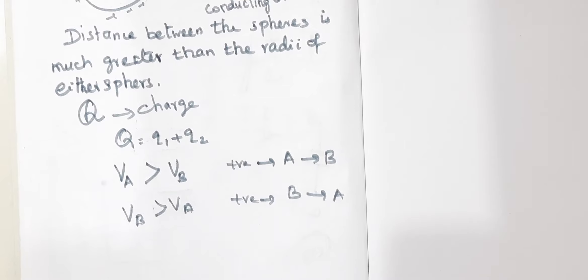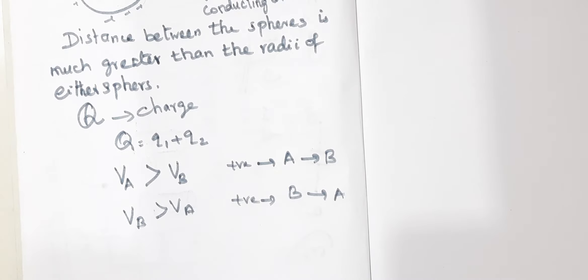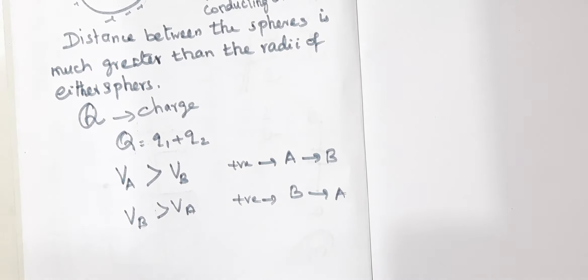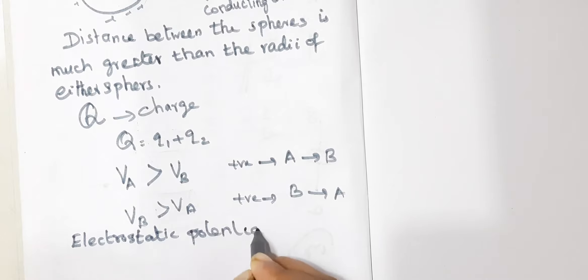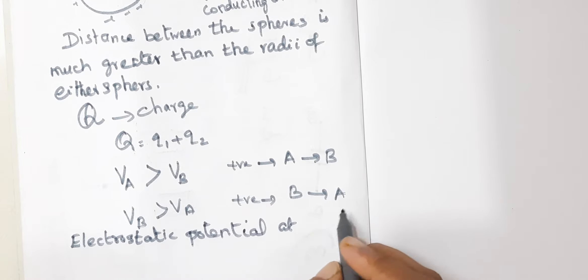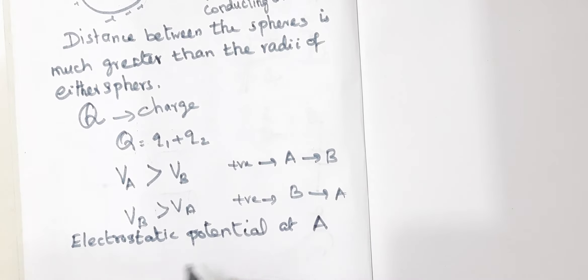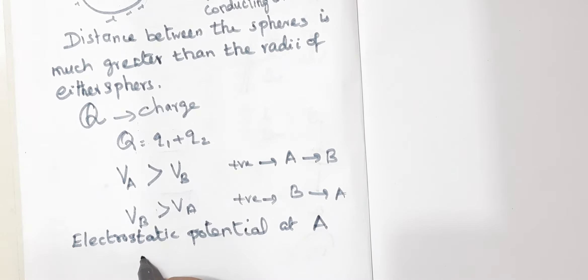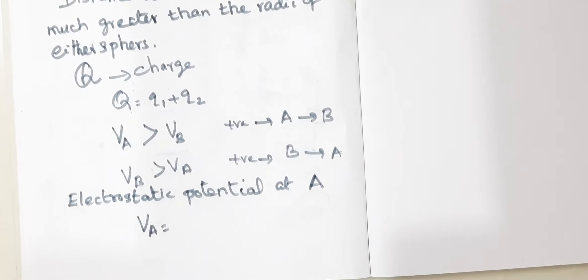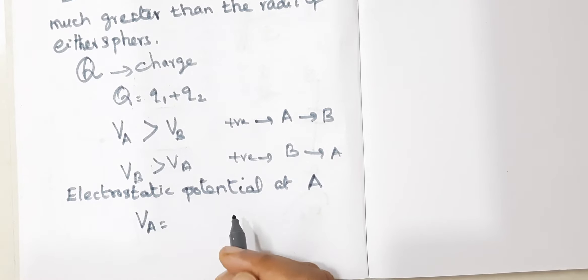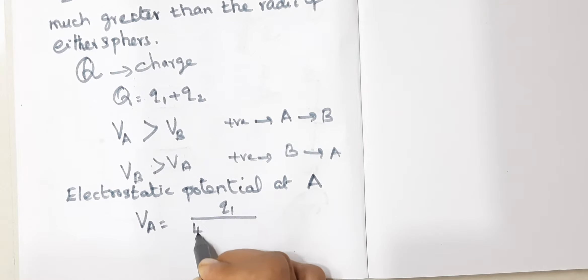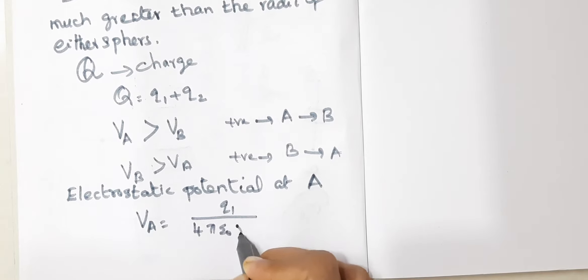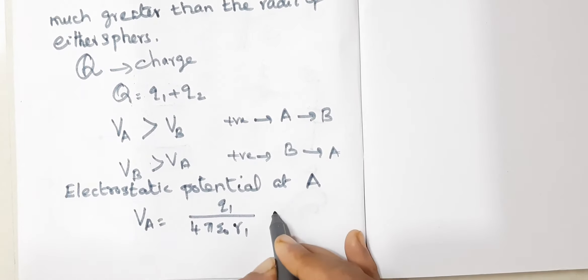Now let us write the potential value. The electrostatic potential at the surface of sphere A is given by the formula V = q / (4πε₀r). Here the charge is Q1, so Va = Q1 / (4πε₀r1). This is equation 1.